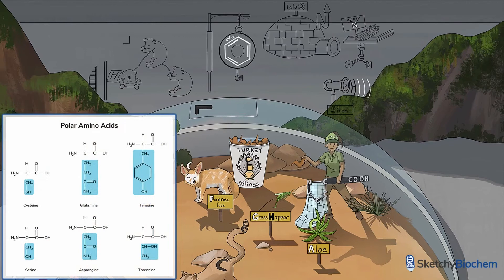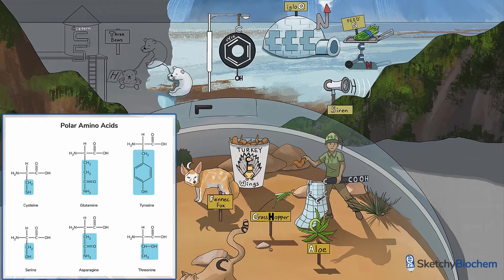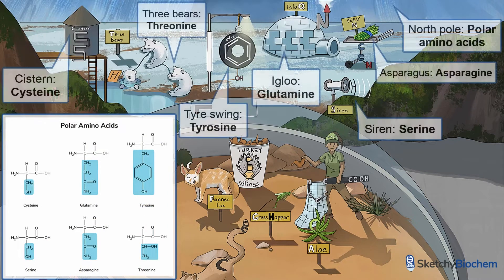All right, bundle up your britches, because we're heading to the North Pole. The polar amino acids have an uneven distribution of charge throughout their atoms. The polar amino acids are depicted as follows: the tyrosine tire swing, threonine bears, and for the cubs, asparagine asparaguses — asparagi — you get the point. We also have the serine siren, a cysteine cistern, and a glutamine igloo, or iglutamine.